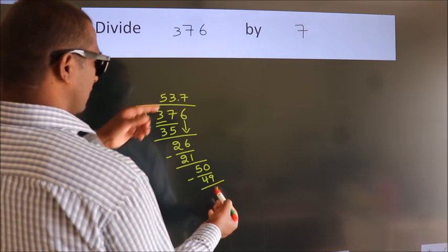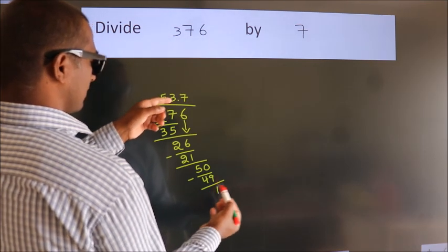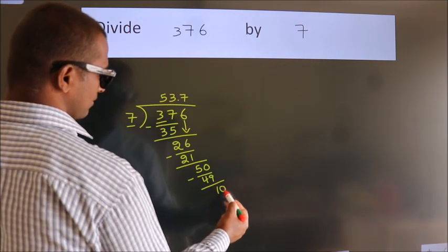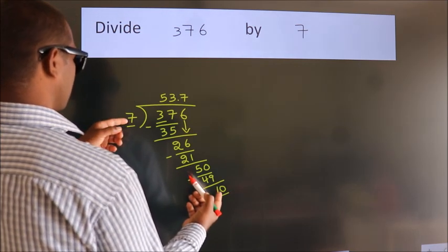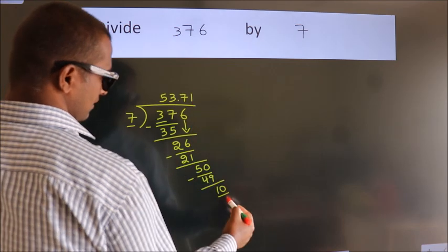After this, we already have the decimal. So directly take 0. So 10. A number close to 10 in the 7 table is 7 ones, 7.